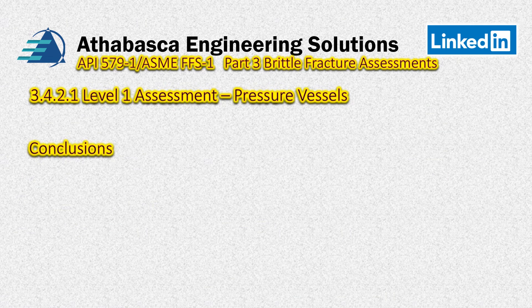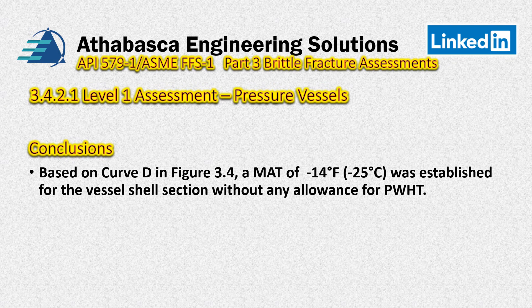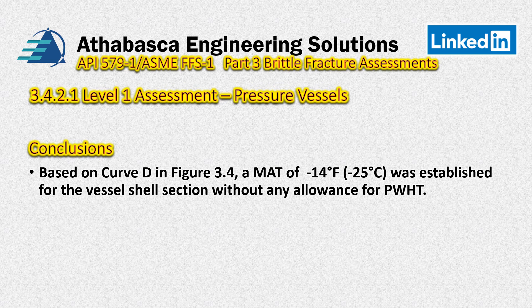On this assessment, you can tell that level one is just meant to be like a 15-minute type of analysis at a high level. Inspectors can do this, and it can be part of the report — it's just an initial check to see roughly where we are. What can we conclude? We have Curve D, and we used that in figure 3.4 to determine the MAT was minus 14 degrees. This was established for a vessel section without any allowance for post-weld heat treatment. We could have, if we had post-weld heat treating, taken more advantage and dropped that temperature more. But in this case, we stop at minus 14. If we want to sharpen our pencil, we can continue down with a level two assessment.